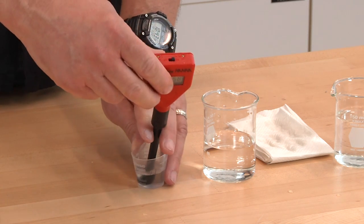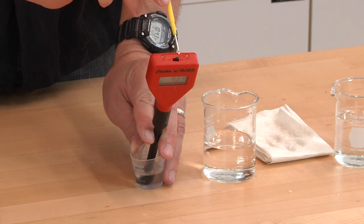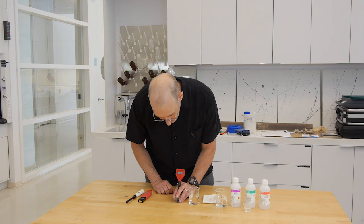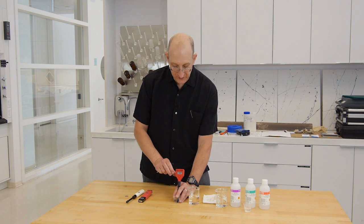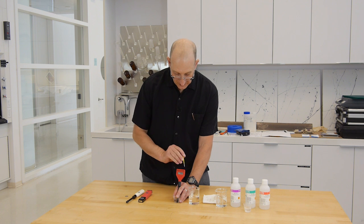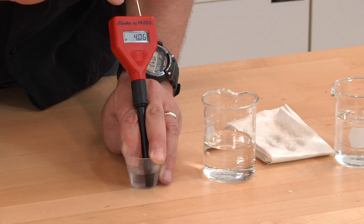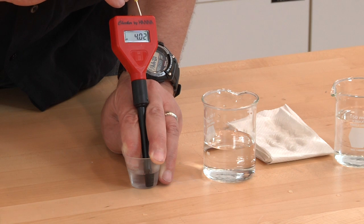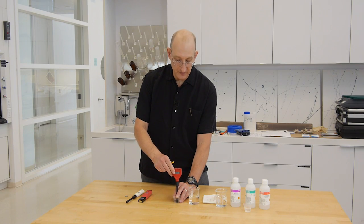And this time we'll be using the adjusting screw. We'll be calibrating to pH 4. So we're at 4.07, 4.06. We put the screwdriver in the second calibration slot. And we're at 4.00. And so the meter is calibrated.